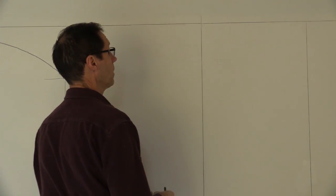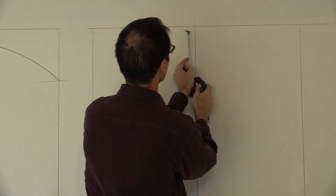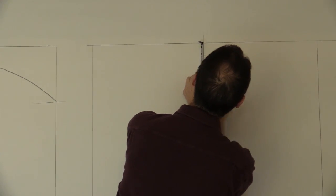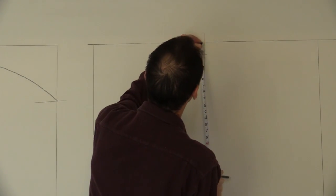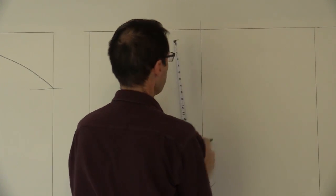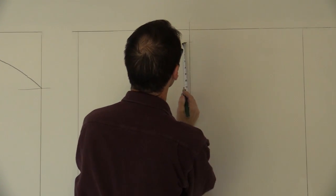I'm going to mark out my height, which is 2 inches below the top of my header. And I'm going to draw out my rise, which is 7 inches down from there.